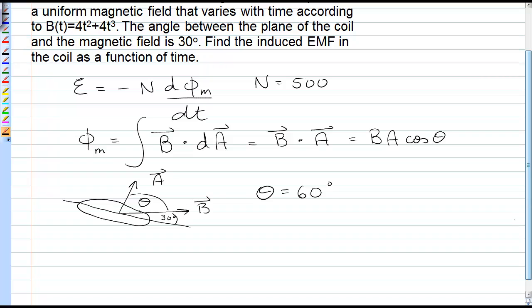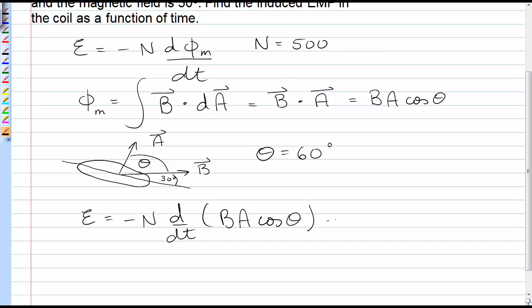Okay, so now we can put that flux expression into the expression for EMF. Negative n d by dt of B times A times cos theta. Now everything that does not depend on time can come out of that derivative. The area doesn't depend on time, the angle doesn't depend on time, and the only thing that depends on time is the magnetic field.